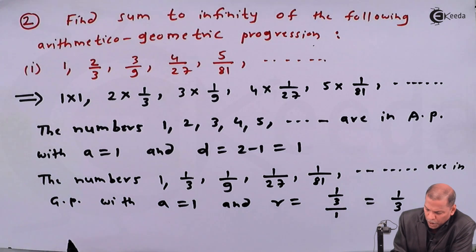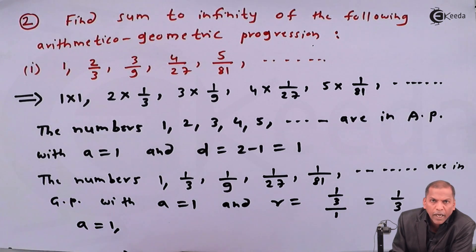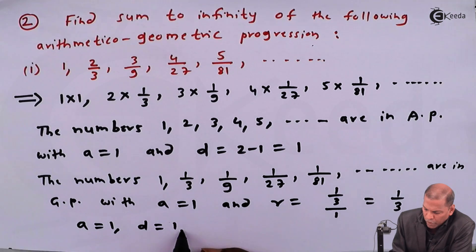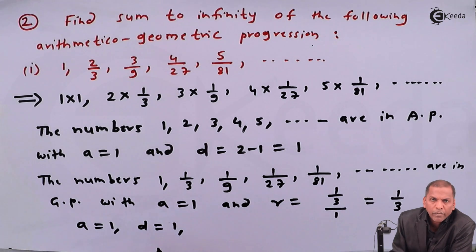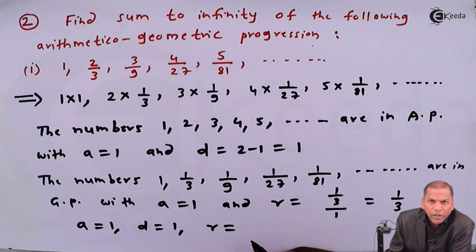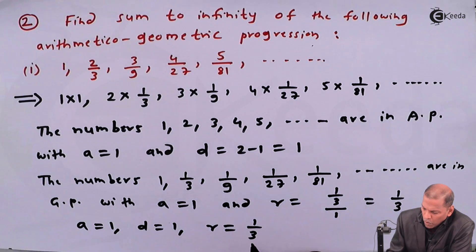So in this way, for the AP we get a = 1 and d = 1, and for the GP we get common ratio r = 1/3.